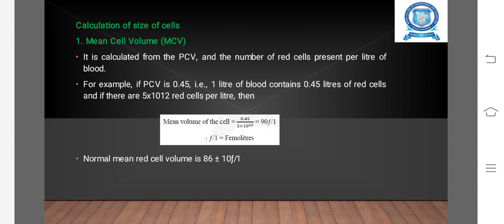Calculation of size of cells - Mean Cell Volume (MCV): It is calculated from the PCV and the number of red cells present per liter of blood. For example, if PCV is 0.45, that means 1 liter of blood contains 0.45 liters of red blood cells.